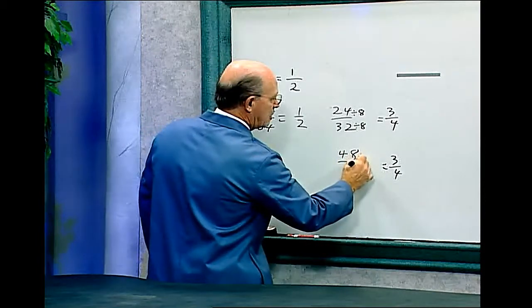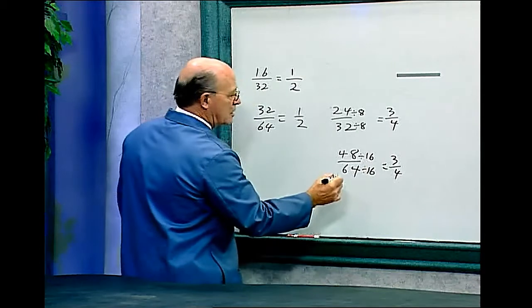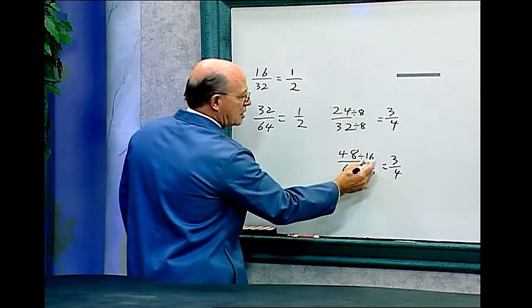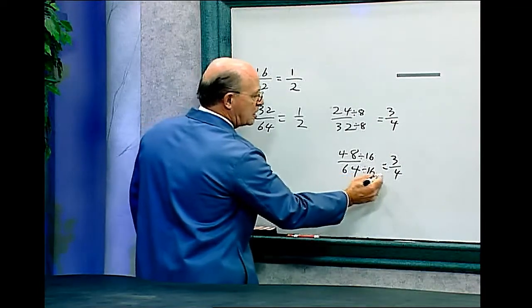And this will be sixteen. Forty-eight divided by sixteen is three, and sixty-four divided by sixteen is four.